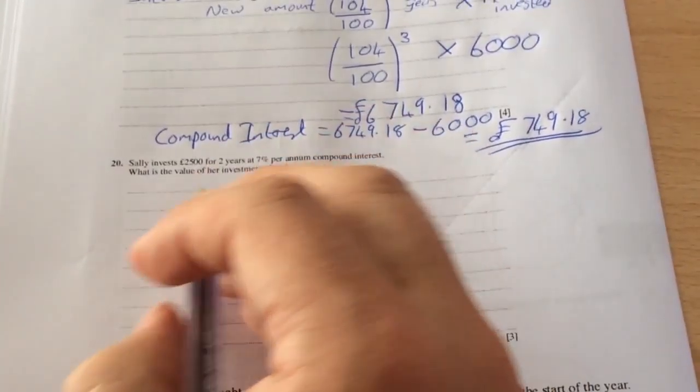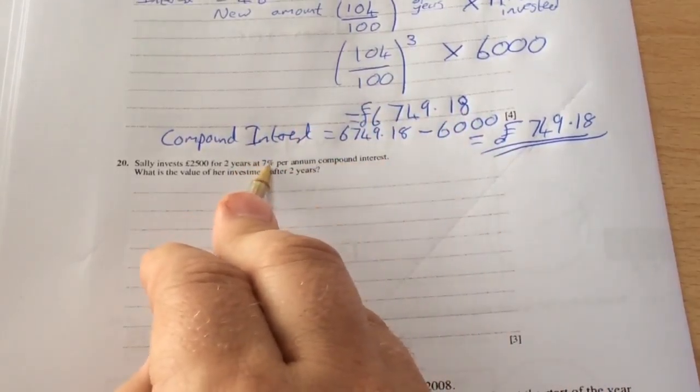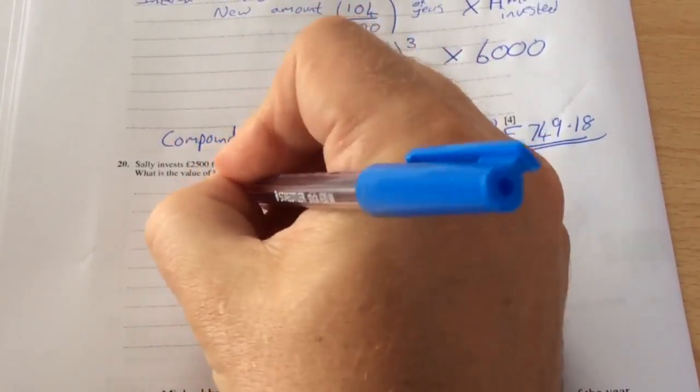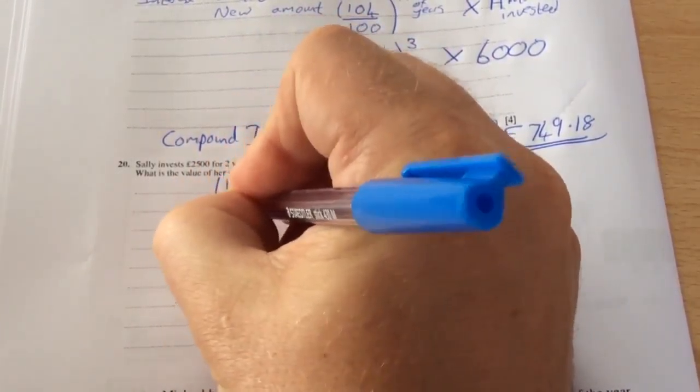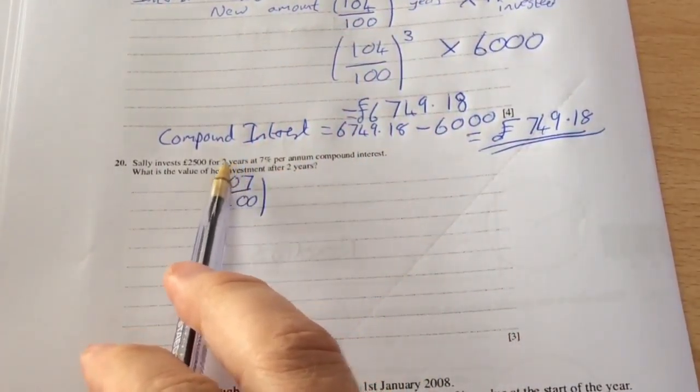If I was using the formula method for the second one, it's 100 plus the interest rate, so it would become 107 divided by 100 to the number of years, which is two, multiplied by £2500.